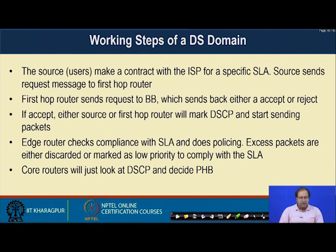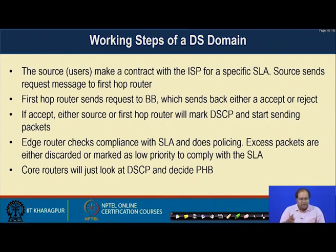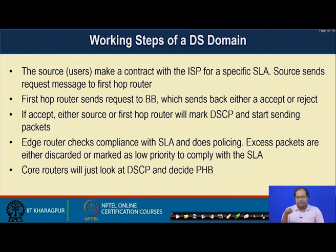These are the working steps of a DiffServ domain. The source or user makes a contract with the ISP for a specific SLA. The source sends a request message to the first operator, then the first operator sends the request to the bandwidth broker, which sends back either accept or reject based on whether the SLA can be ensured in delivering the packet. If accepted, either the source or the first operator marks the DSCP field and starts sending the packet. Edge routers at every DS domain check compliance with the SLA; excess packets are either discarded or marked as low priority to comply with the SLA — which is why DiffServ is called best-effort QoS, not guaranteed QoS. Core routers simply look at the DSCP field and decide the corresponding per-hop behavior.